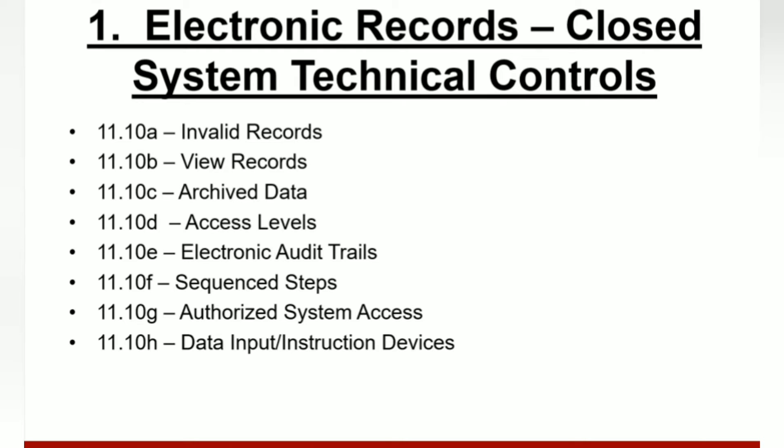For 11.10F, if sequence steps are required, the system must ensure that the actions are performed in the correct sequence. For 11.10G, the system must ensure that only authorized individuals can use it. For 11.10H, if it is a requirement that data input or instructions only come from specific input devices such as instruments or terminals, the system must check for the correct device.